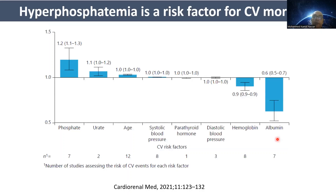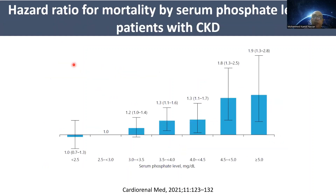Hyperphosphatemia is one of the strong risk factors for cardiovascular mortality. The higher the phosphorus level, the higher the cardiovascular mortality.